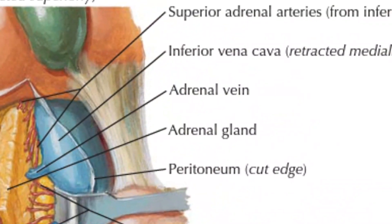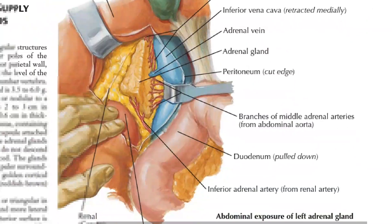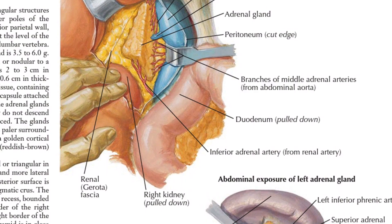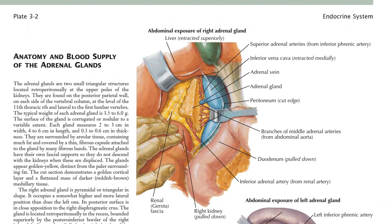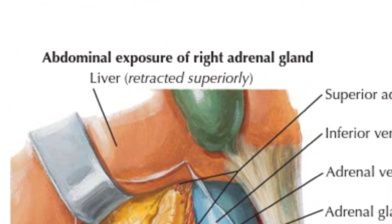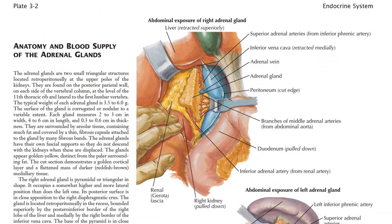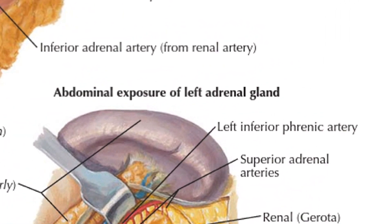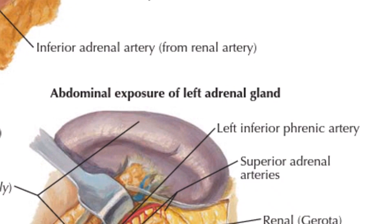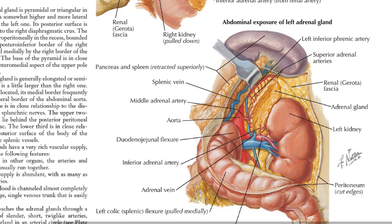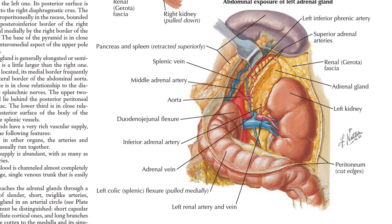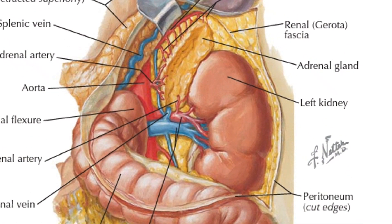You can read the labels: the vein, the vena cava, the duodenum, and the right kidney shown here. This view shows the liver as well — this is the abdominal exposure of the right adrenal gland. In the next figure, we have the abdominal exposure of the left adrenal gland shown in the abdominal cavity. Here the left kidney is shown, and on the top of the left kidney you can see the adrenal gland.